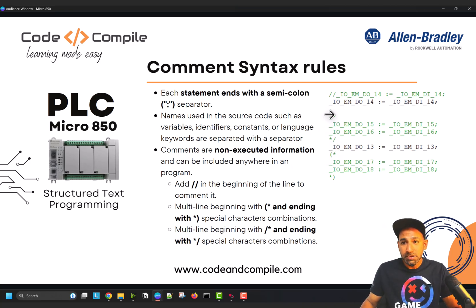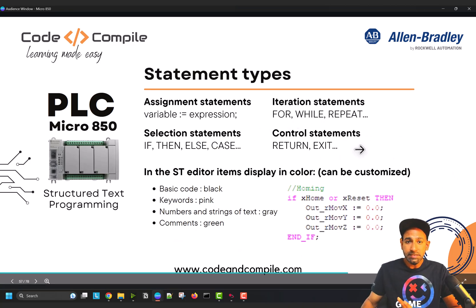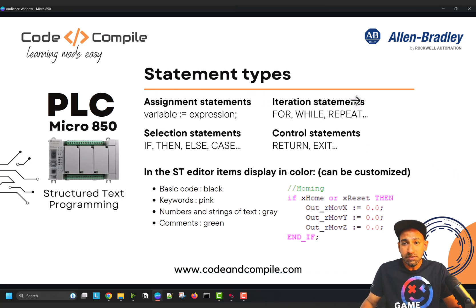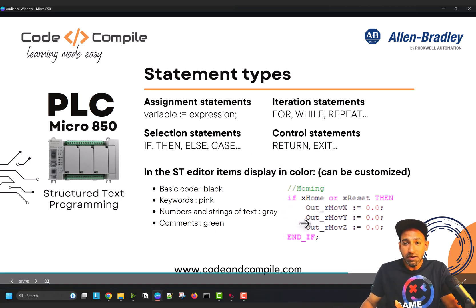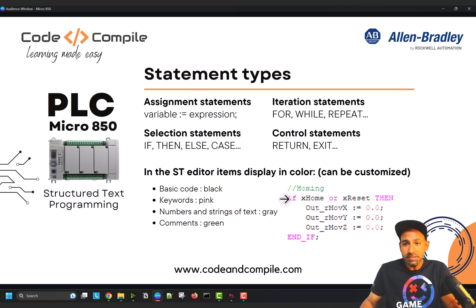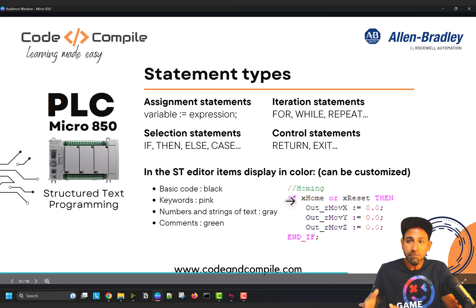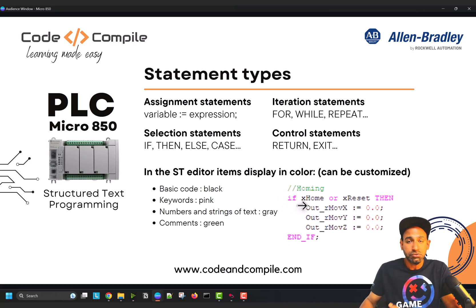You can use an open bracket or a slash with a star to indicate a block comment. There are several statements we're going to learn: assignment statements, loops — for loop, while loop, repeat loop — selection statements like if-else, and control statements like return and exit. These are very important for basic PLC programming. In the editor, the basic code is in black, keywords like 'if' and 'then' are highlighted in pink — you can't use these as variable names — numbers and strings are gray, and comments are green. You can also change the colors.